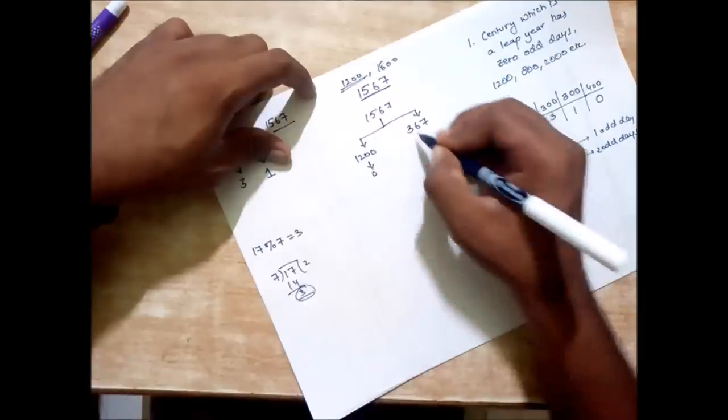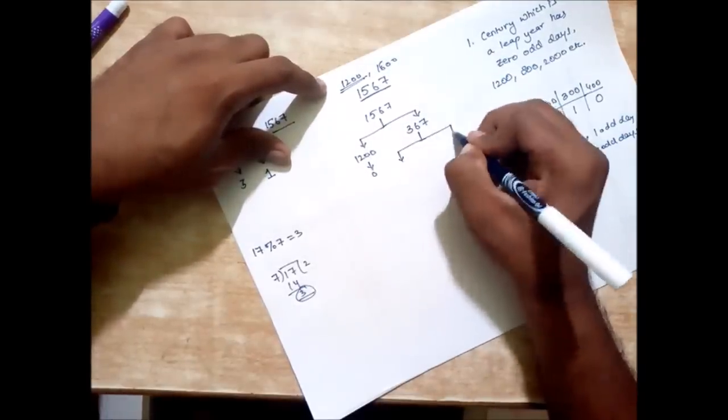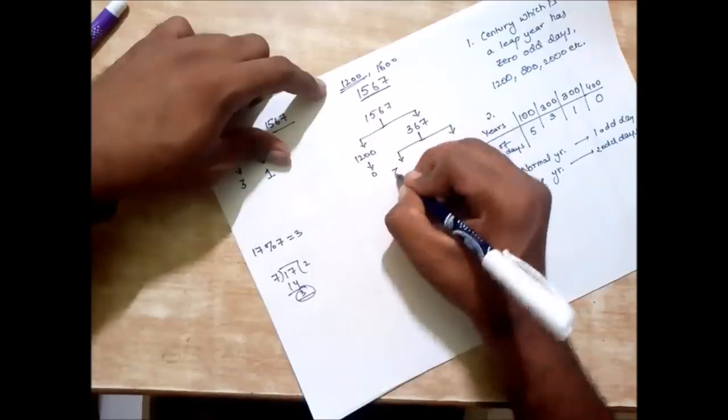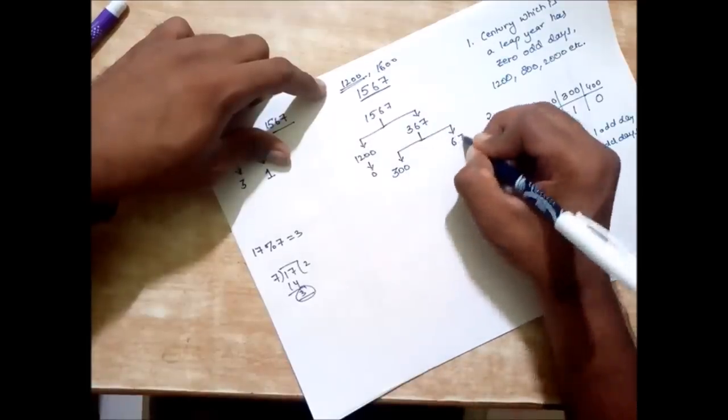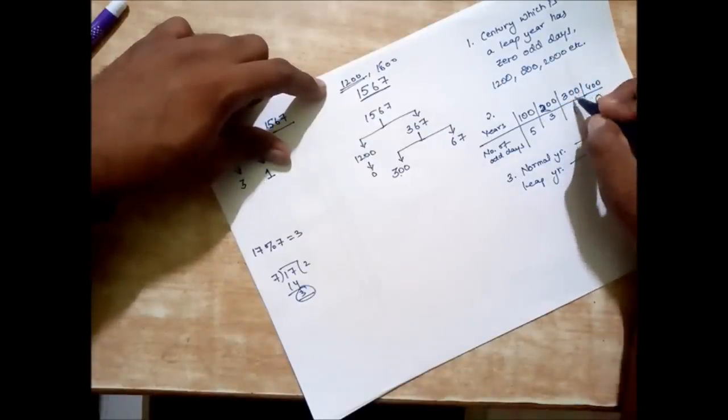So according to rule number one, century year which is a leap year has zero odd days, so it comes out to be zero. Now for this we will be subtracting and dividing into two parts which is 300 and 67.